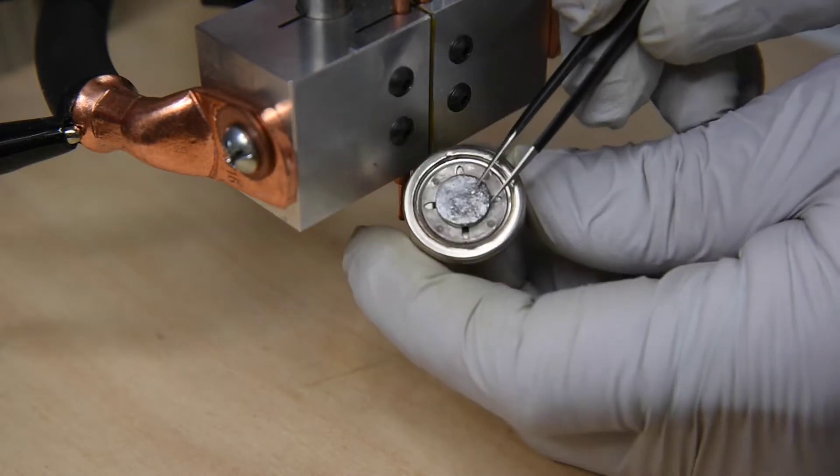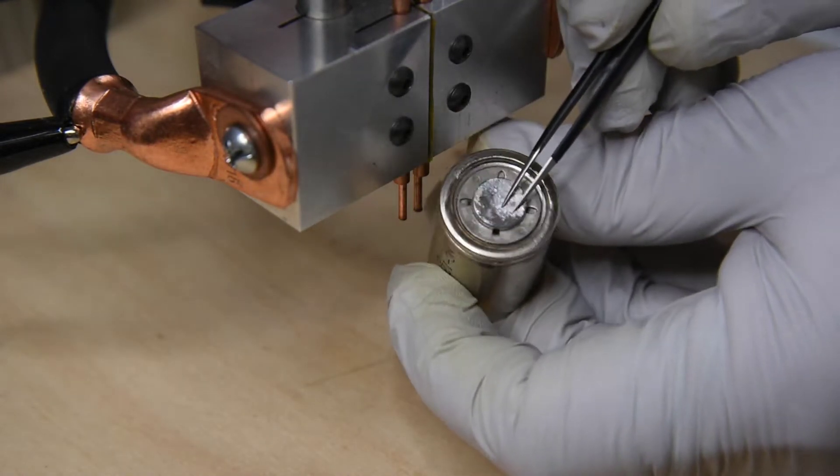So probably in the range of 80 to 95 joules is going to give the best welds at this tip distance.